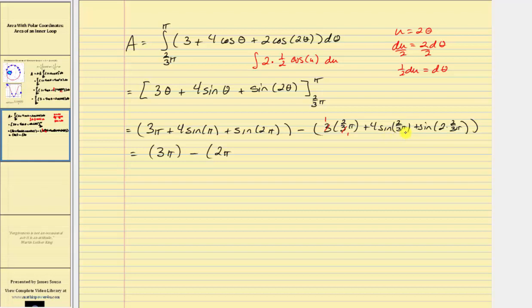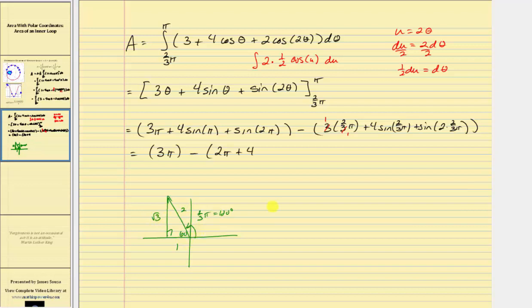To evaluate sine two thirds pi, let's use a reference triangle. Two thirds pi equals 120 degrees, so the terminal side is in the second quadrant with a reference angle of 60 degrees. Therefore the short leg is one, the hypotenuse is two, and the long leg is square root three. But because we're in the second quadrant where x is negative, this leg is negative one. Using the reference triangle, sine two thirds pi radians equals the ratio of the opposite side to the hypotenuse, which is square root three divided by two, giving us four times square root three divided by two.